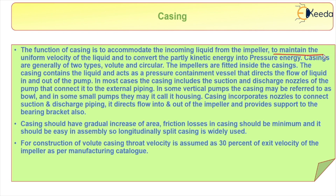The casings are generally of two types: number one is volute and circular. The impellers are fitted inside the casing, and the casing contains the liquid and acts as the pressure containment vessel that directs the flow of liquid in and out of the pump.